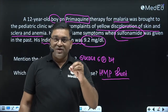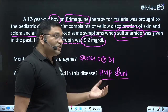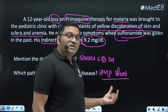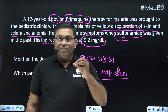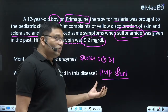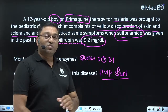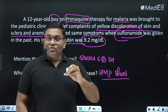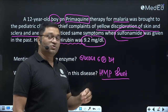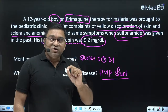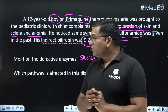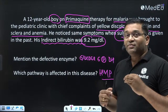It is called hexose monophosphate shunt because there is generation of monophosphate compounds, as opposed to bisphosphates in glycolysis. Phosphogluconate is an intermediate in this cycle, so it is also known as the phosphogluconate pathway — an alternative pathway for oxidation of glucose into CO2. That is why it is known as the shunt pathway.